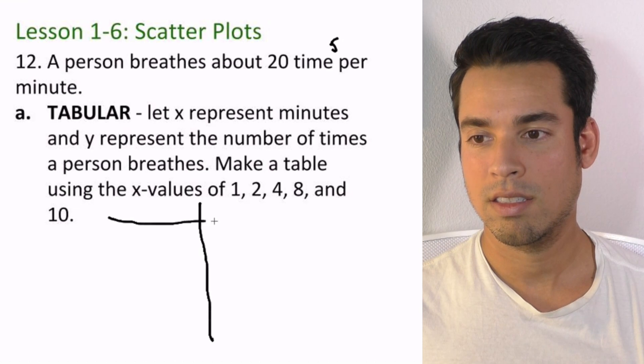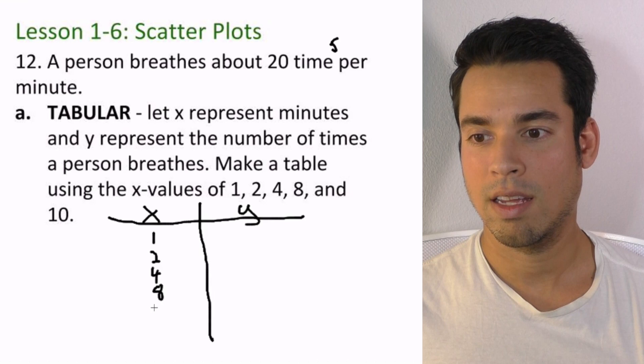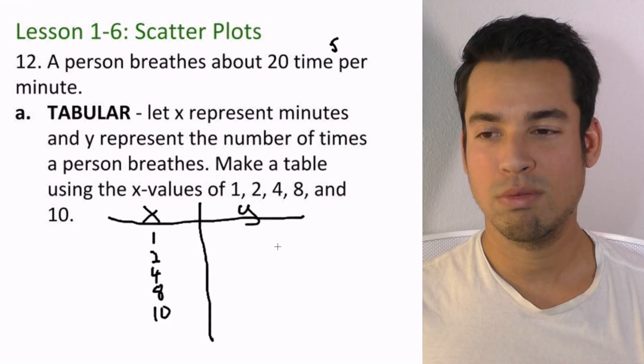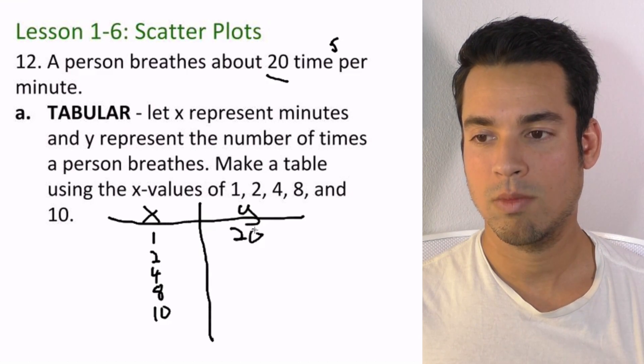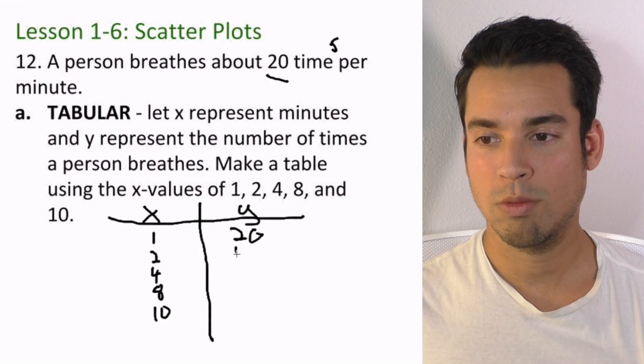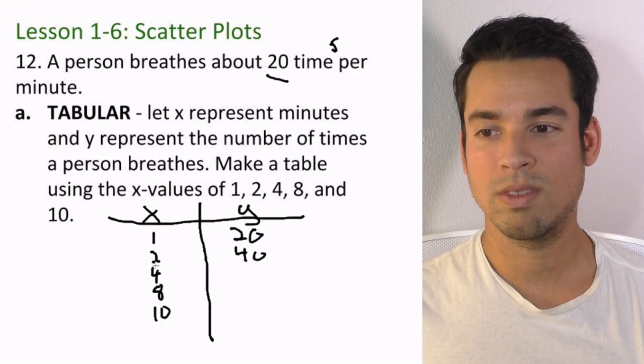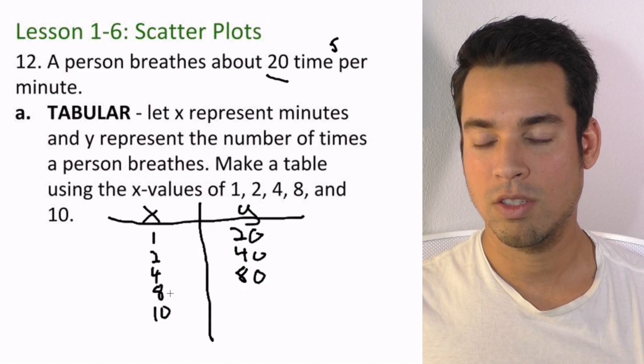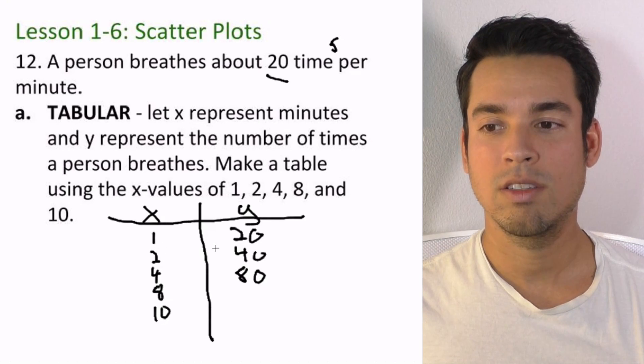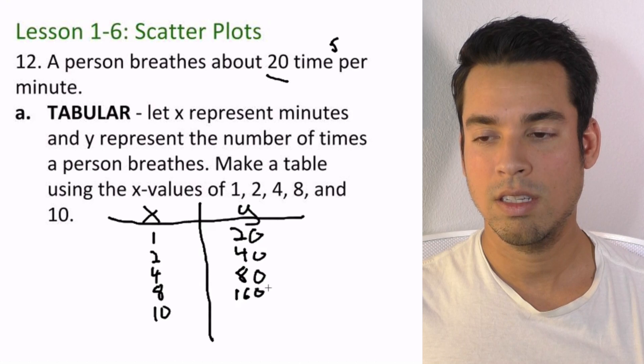So we got it like this - we got x and we got y. Remember x is minutes, so this is after one minute, two minutes, four minutes, eight minutes, and ten minutes. And then y is number of times a person breathes. Okay, well we already know at one minute, tells us at the top, we're breathing 20 times. What about for two minutes? Well it's got to be double, right? So it should be 40 times. What about in four minutes? That's probably double two, so in four minutes, if we're breathing 20 times in one minute, it should be 80 times. What about eight? Well again, one minute is 20, two is 40, three is 60, so on and so forth. So we just multiply 8 times 20, which gives us 160. And finally for 10 minutes, multiply that by 20 and it's simply 200 breaths in 10 minutes.